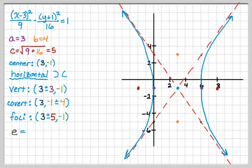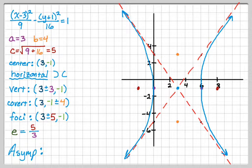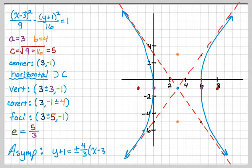I can calculate the eccentricity — that's just C over A, so it's pretty easy. For the asymptotes, as I explained in the previous video, I change the equation from being equal to 1 to being equal to 0, move the y-term over, multiply both sides by 16, giving 16 over 9, then take the square root. The result is y plus 1 equals plus or minus 4/3 times (x minus 3). That's the entire graph and all the information you'd have to list.